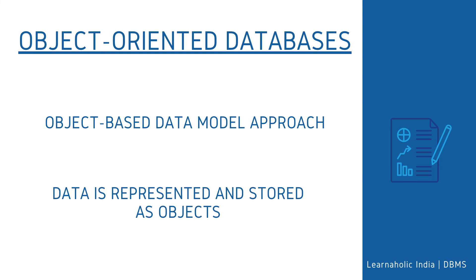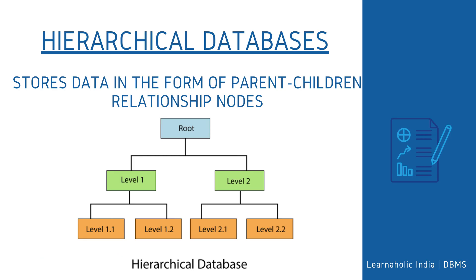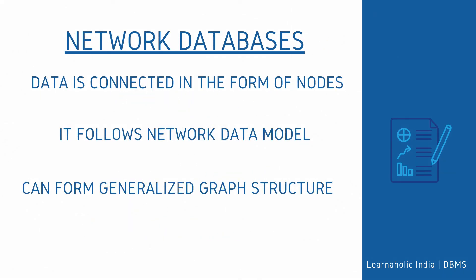The next type is Object-Oriented Databases — a type of database that uses the object-based data model approach for storing data. The data is represented and stored as objects, similar to the objects used in object-oriented programming languages. Next is Hierarchical Databases, which store data in the form of parent-children relationship nodes, organized in a tree-like structure. Data is stored as records connected via links, where each child record has only one parent, but each parent record can have multiple child records. Next is Network Databases, which typically follow the network data model. Unlike the hierarchical database, it allows each record to have multiple children and parent nodes, forming a generalized graph structure.